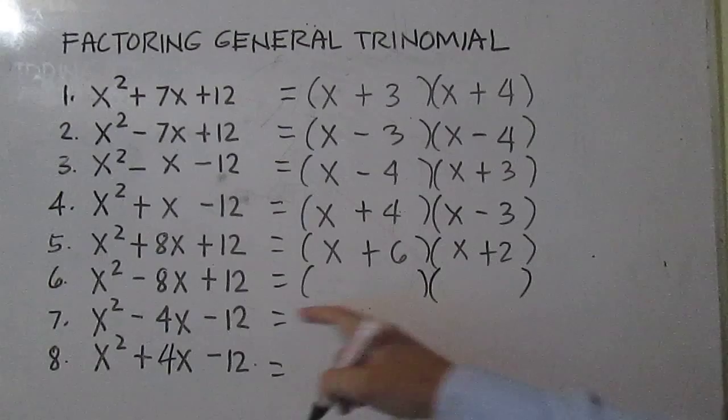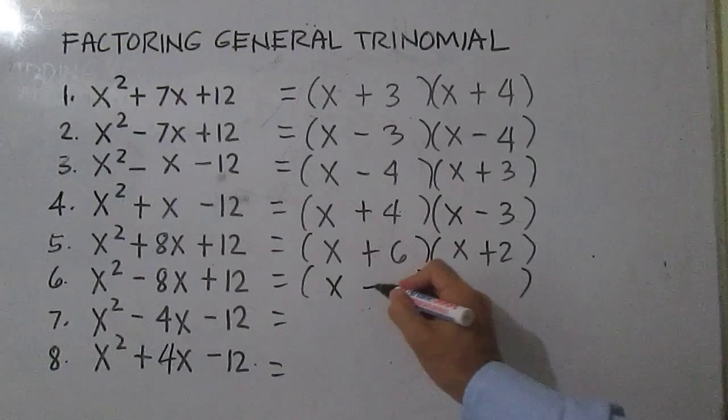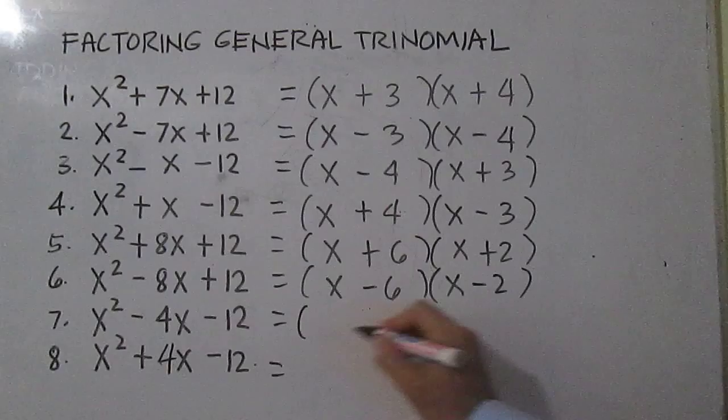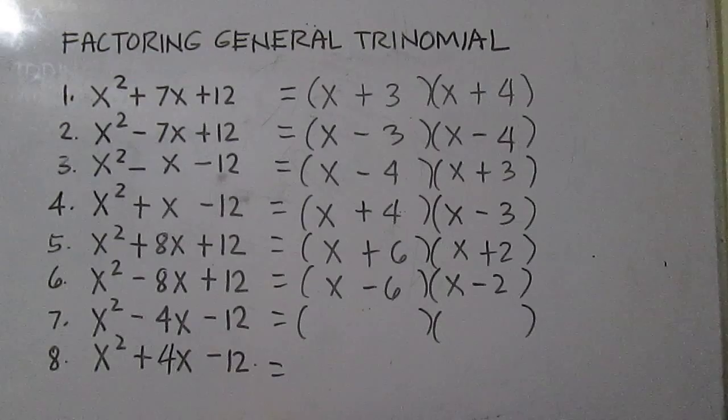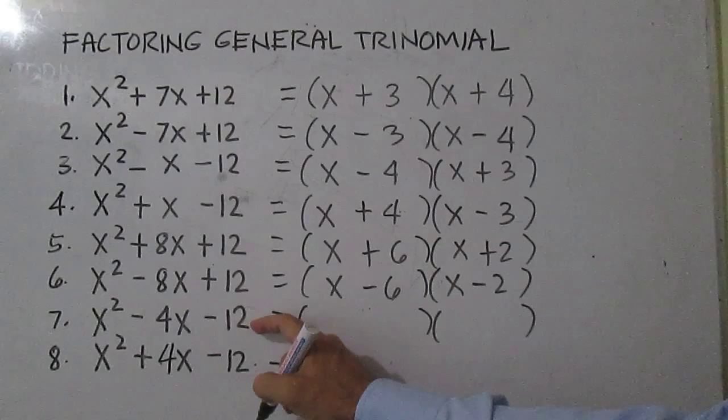Number 6 is the same but the middle term is negative 8, so you have X minus 6 and X minus 2. For number 7, you have negative 12 and a middle coefficient of negative 4, so think of two numbers that give you a product of negative 12 and a sum of negative 4. You have X minus 6 and X plus 2.